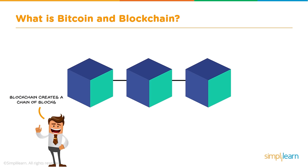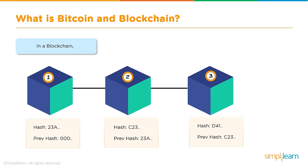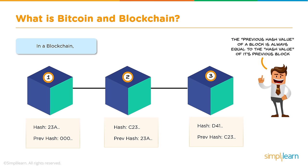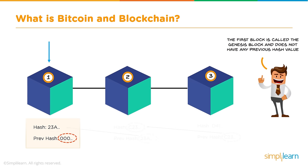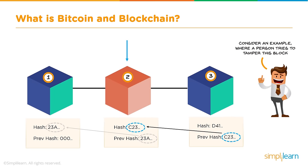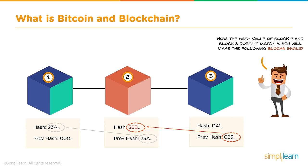Blockchain creates a chain of blocks. The previous hash value of any block always equals the hash value of the block before it. Block number one's previous hash is zero because it is the first block — called the genesis block. If someone tries to tamper with block number two, its hash will change, making the previous hash value of block three invalid. This mismatch makes all subsequent blocks invalid, eliminating data tampering.